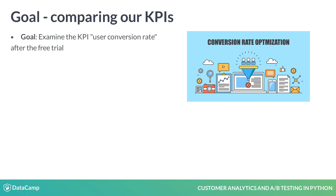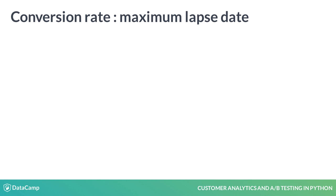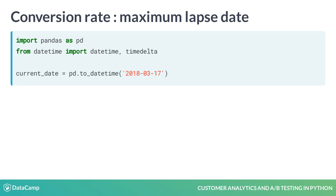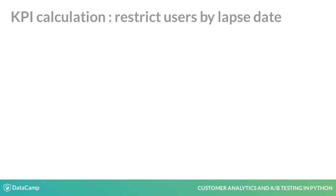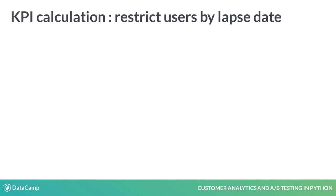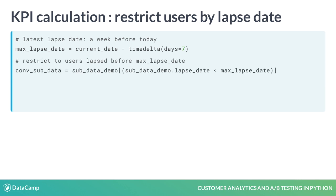We will start by examining the KPI. In this case, we will look at the first week after the trial ends. Consider our current date to be March 17, 2018. To start, we need to check what the maximum lapse date in our dataset is, which turns out to be today. Then, we need to remove users who lapsed today or in any of the prior seven days. This ensures that everyone had a full seven days to potentially subscribe. We do this by filtering on the condition of our lapse date being less than the current date minus seven days.